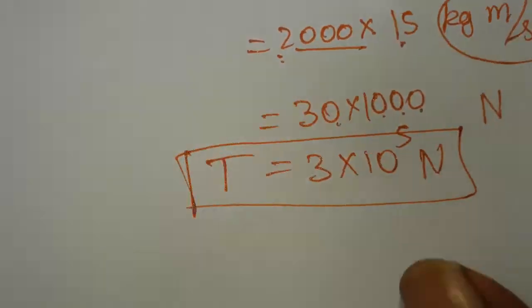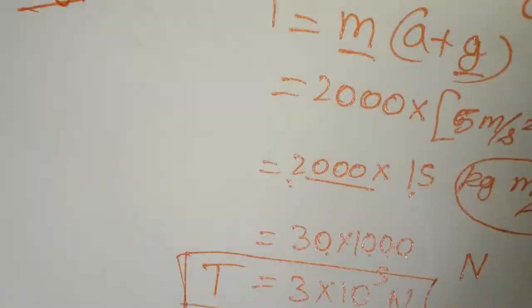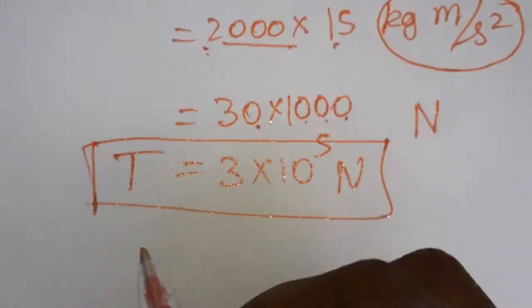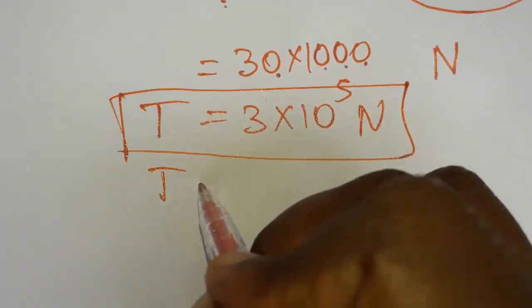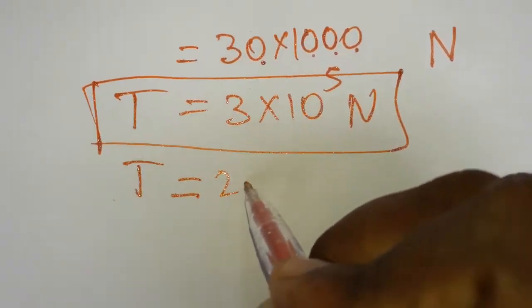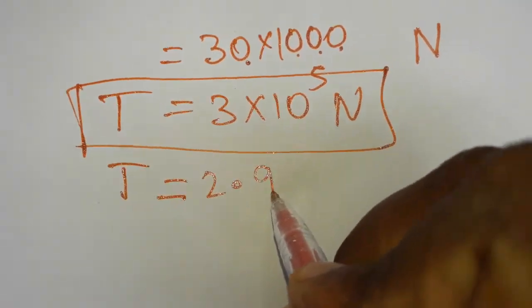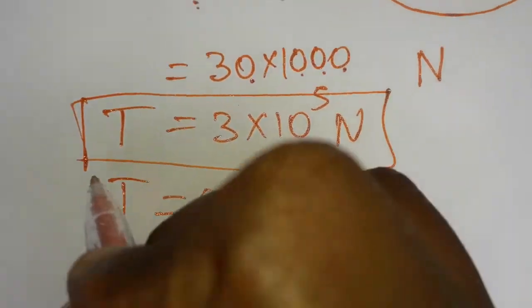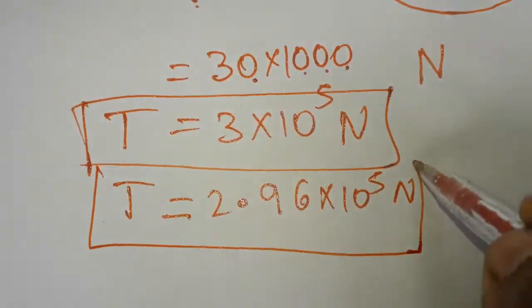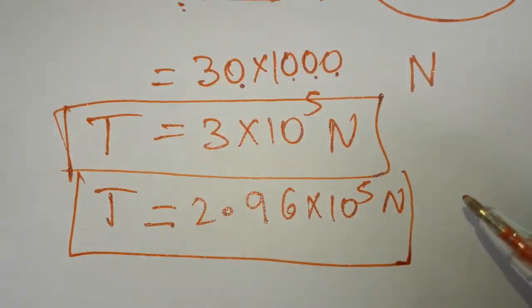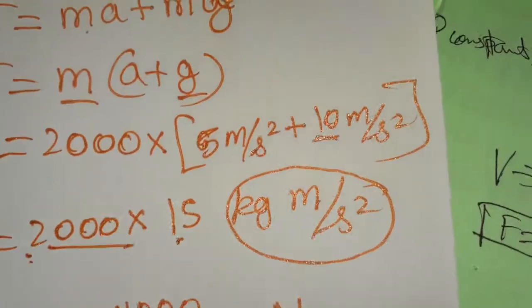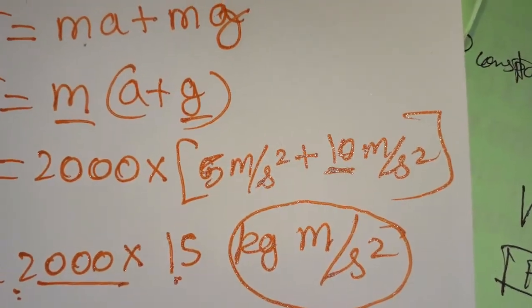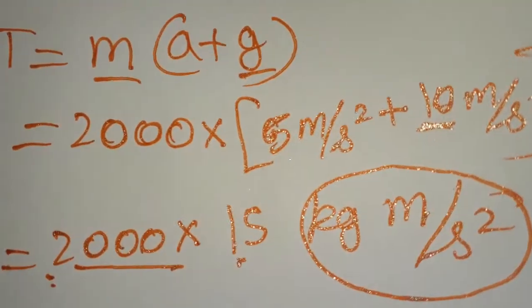In case we take g as 9.8, then T works out to approximately 2.96 into 10 to the power 5 newtons. Both values are approximately equal, so there is no problem taking g as either 9.8 or 10. Thank you.